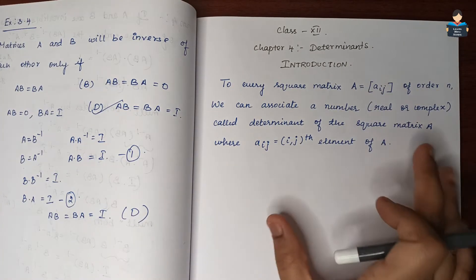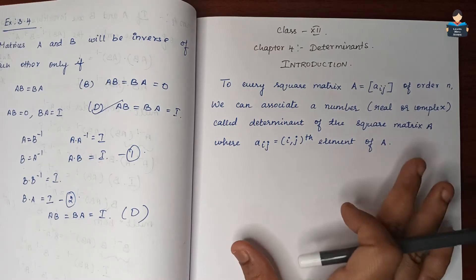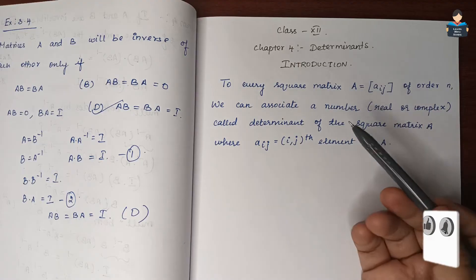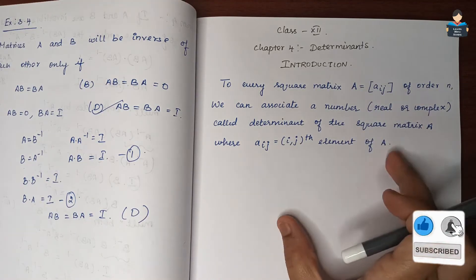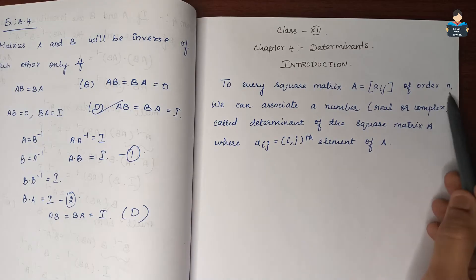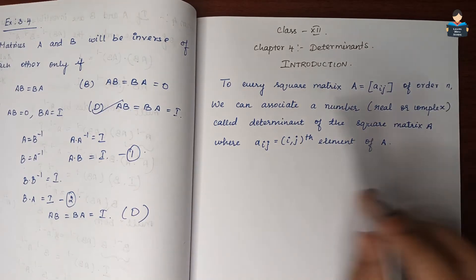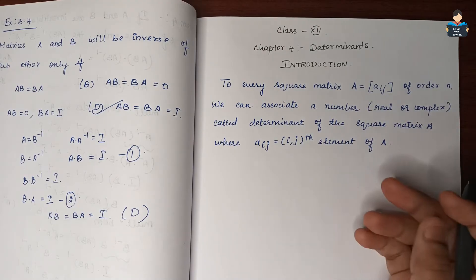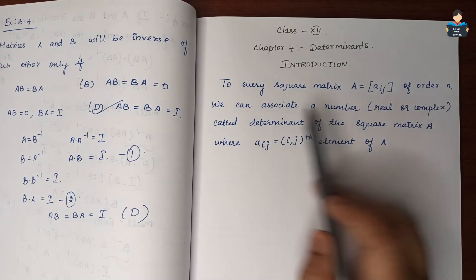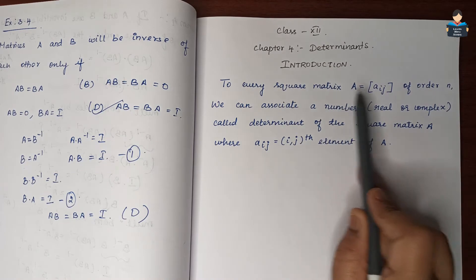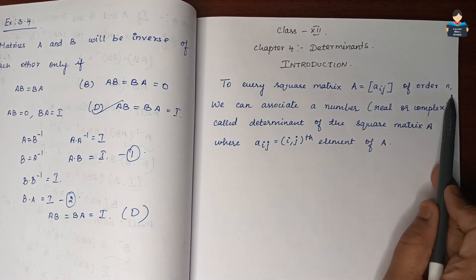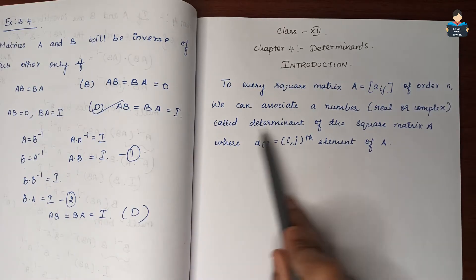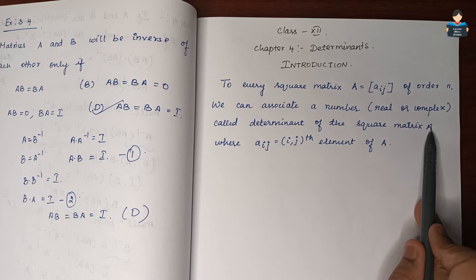So, Determinants. In this chapter, what is N? What is a square matrix of any order? This order is N. For example, a 2 by 2 matrix or a 3 by 3 matrix. To every square matrix A of order N, we can associate a number called the Determinant of the square matrix A.